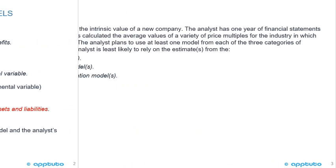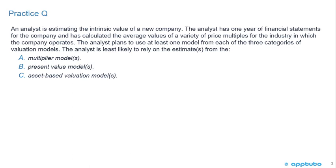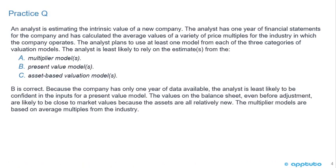Practice question: An analyst is estimating the intrinsic value of a new company. The analyst has one year of financial statements and has calculated the average values of a variety of price multiples for the industry. The analyst plans to use at least one model from each of the three categories of valuation models. The analyst is least likely to rely on: A) the multiplier model, B) the present value models, or C) the asset-based valuation models.